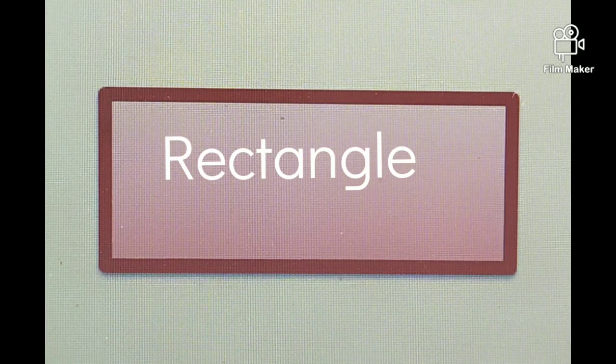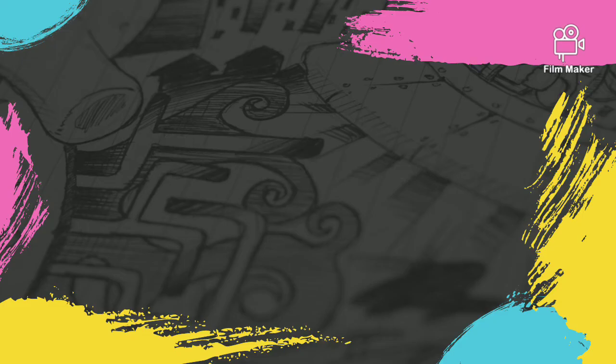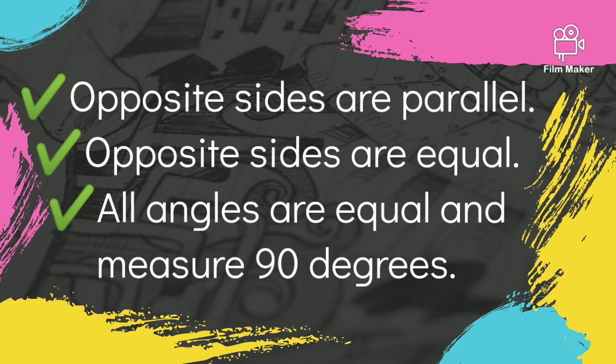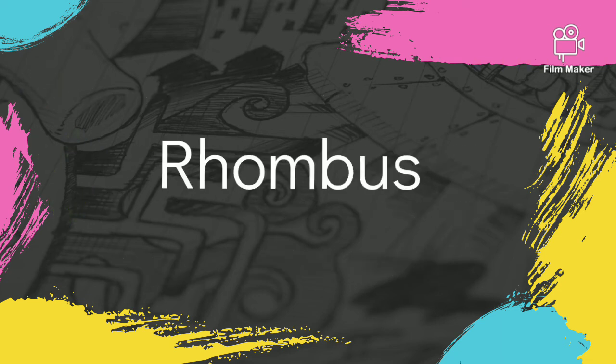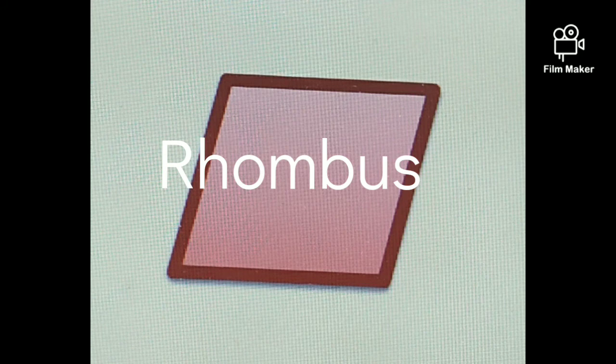Third is the rectangle. In a rectangle, opposite sides are parallel, opposite sides are equal, and all angles are equal and measure 90 degrees.